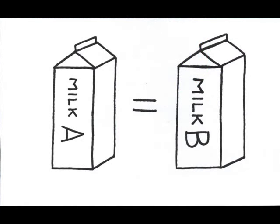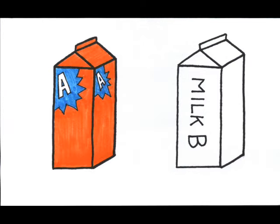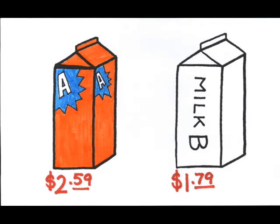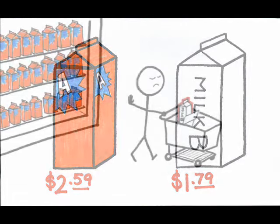Three, there's perfect information. It's actually not enough for products to be identical. Everyone has to know that the products are identical. Otherwise, we could be fooled by things like pretty packaging or celebrity endorsements. In a perfectly competitive industry, firm versus firm advertising is useless. All you'd be doing is driving up your own costs, and then customers would just buy from a cheaper competitor.